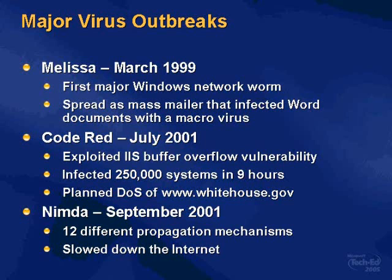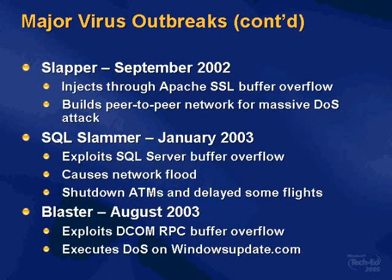Code Red planned a denial of service attack on the WhiteHouse.gov site, which was actually never carried out — they were able to prepare and stop it from being effective. NIMDA was released in September of 2001 — admin spelled backwards. It had 12 different propagation mechanisms and several attack vectors, including the same one Code Red used, and it actually slowed down the Internet for several hours.